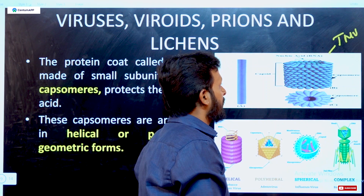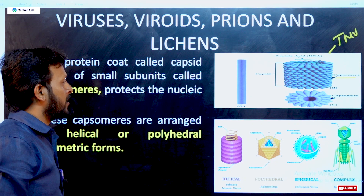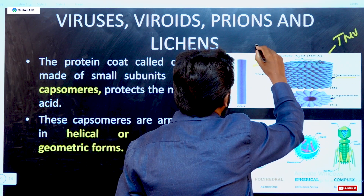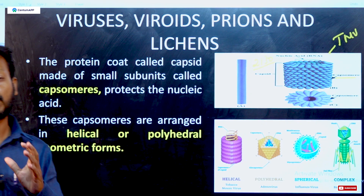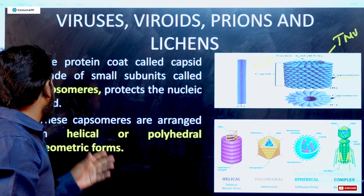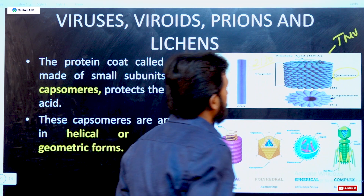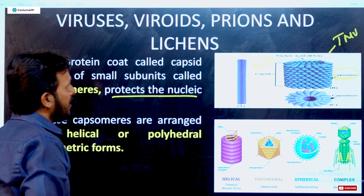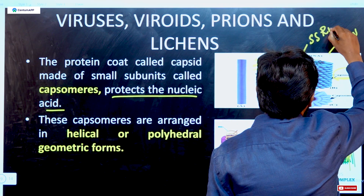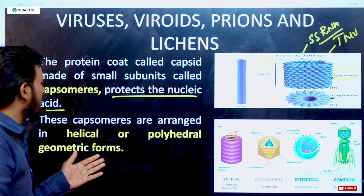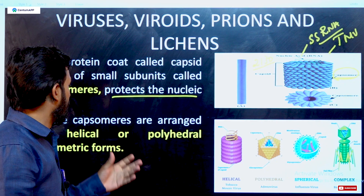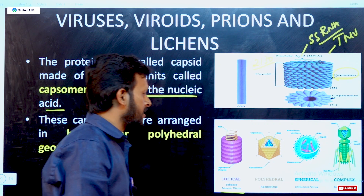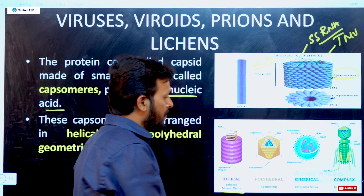The entire protein coat of Tobacco Mosaic Virus consists of 2130 capsomeres. Each small subunit is called a capsomere, which protects the nucleic acids — mostly single-stranded RNA. Capsomeres can be arranged in helical form (as in Tobacco Mosaic Virus), polyhedral form (as in adenovirus), spherical form (as in influenza virus), or a complex structure (as in bacteriophage).